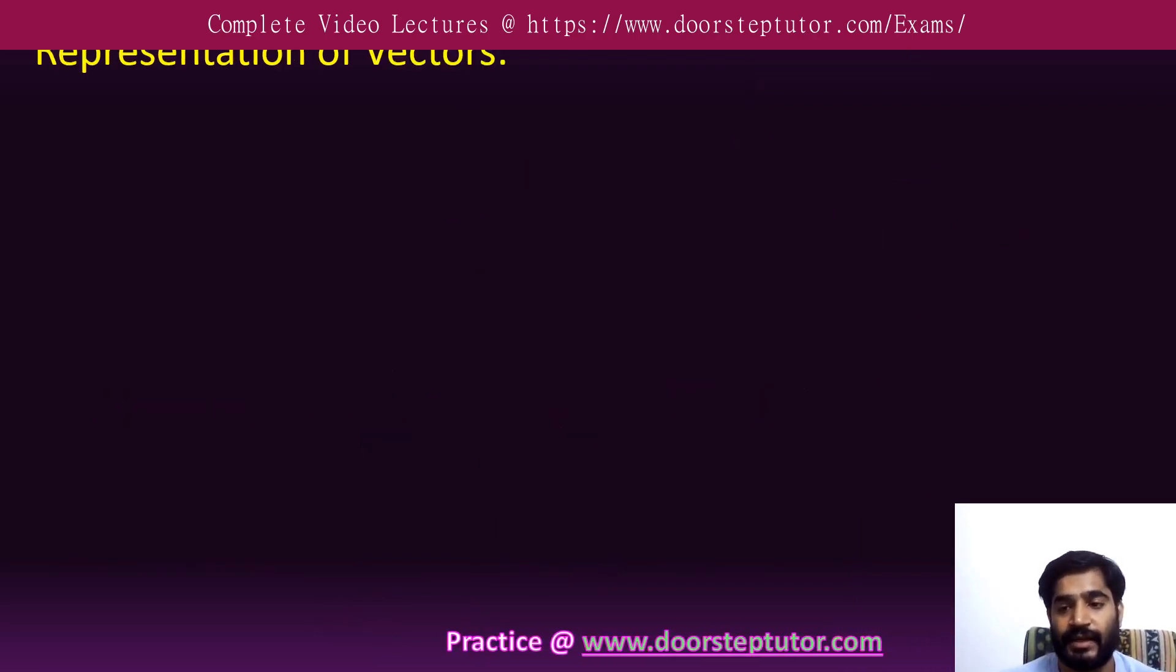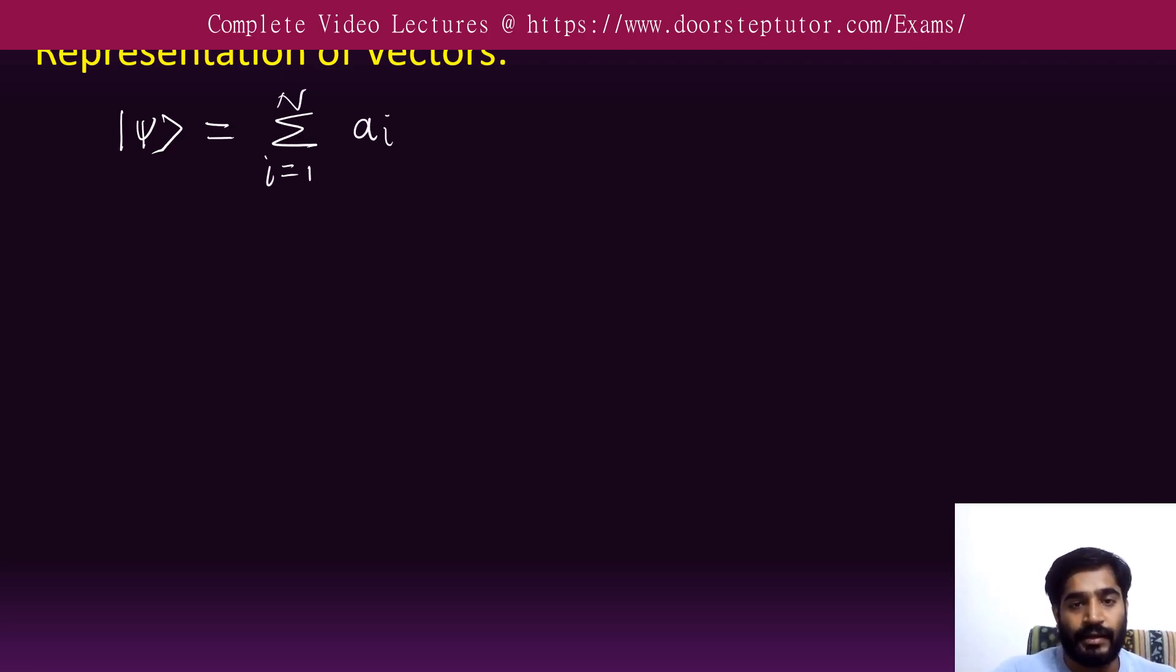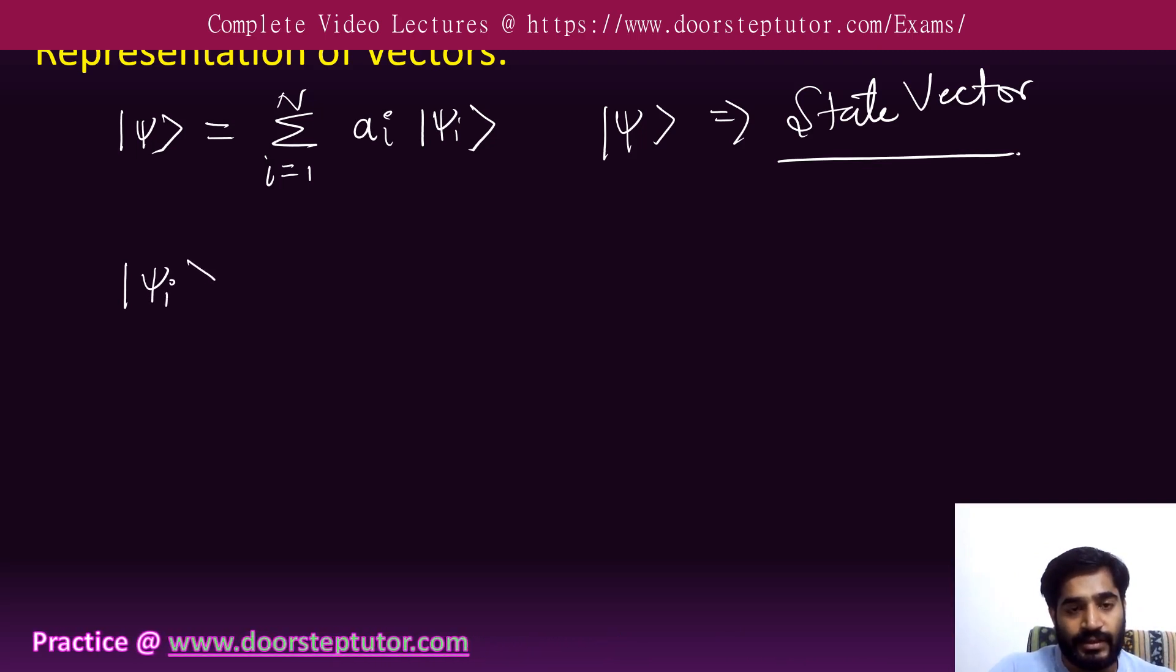Now we represent that function in terms of the ket. If I represent the ket of psi, it's going to be summation from i=1 to n of ai and psi of i ket, where psi is actually a state vector. This state vector defines the state of the function, for example ground state, first state, second state, and so on.